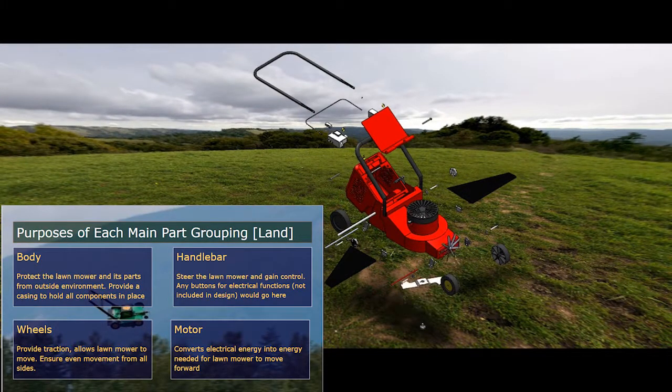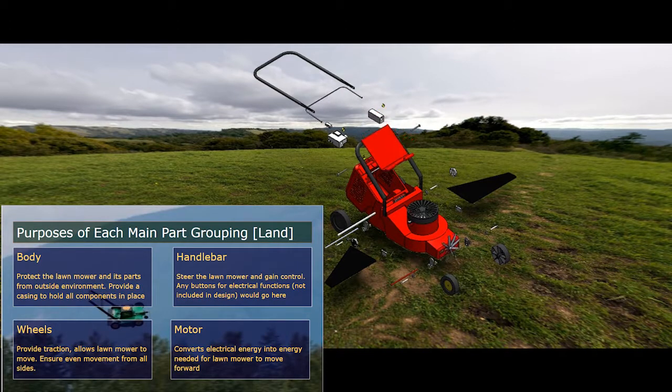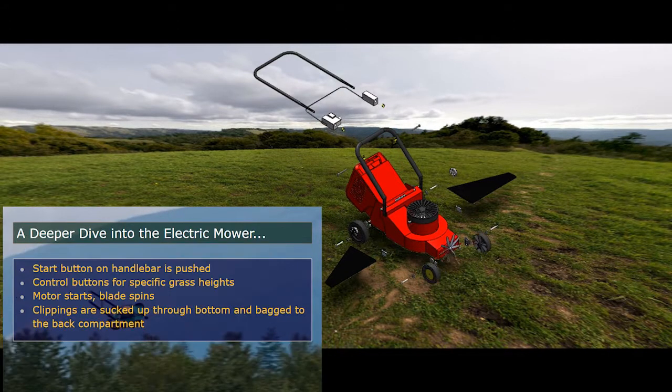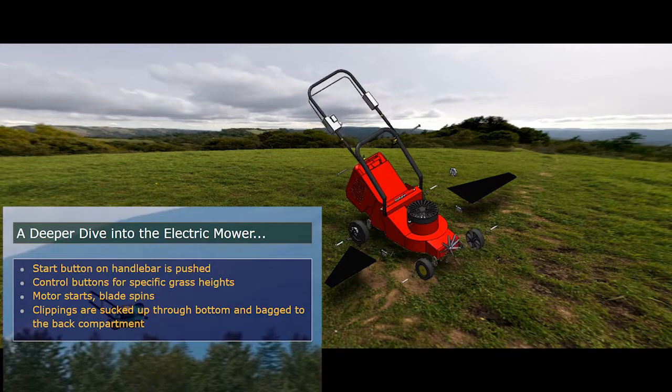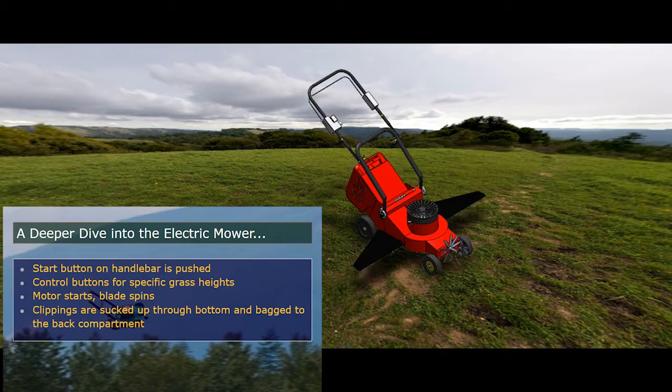You can also see the basket which holds the lawnmower bag is open. This is where all of the grass would go. When the blade spins, a vacuum-like effect occurs, and the grass is sucked up and goes to that back compartment. It can then be emptied out in the end.